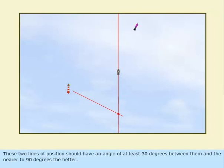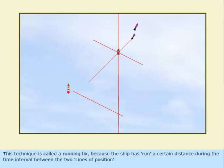These two lines of position should have an angle of at least 30 degrees between them, and the nearer to 90 degrees the better. This technique is called a running fix because the ship has run a certain distance during the time interval between the two lines of position.